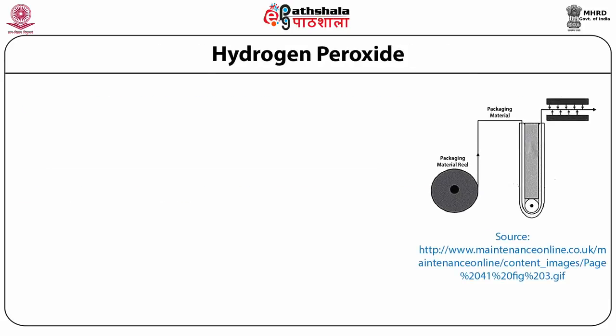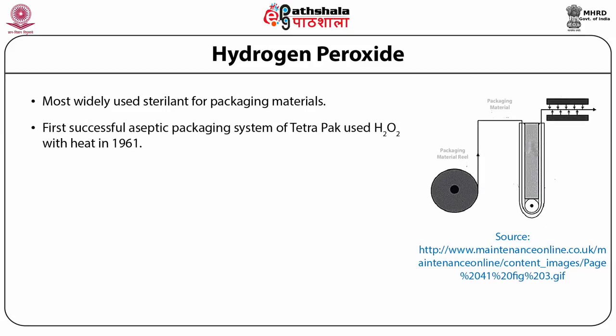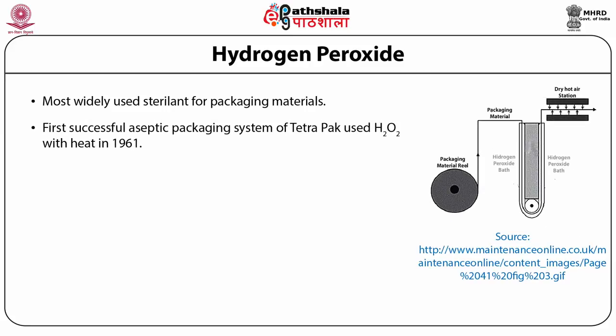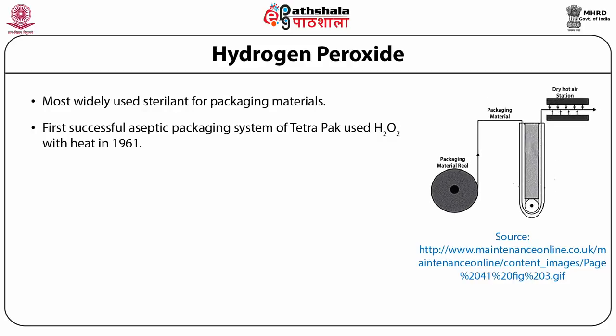Hydrogen peroxide is one of the most widely used sterilants for sterilizing packaging materials. The first successful aseptic filling system for cartons — the aseptic Tetra Pak of 1961 — used a combination of hydrogen peroxide and heat for the sterilization of the container material surface (Burton, 1988).